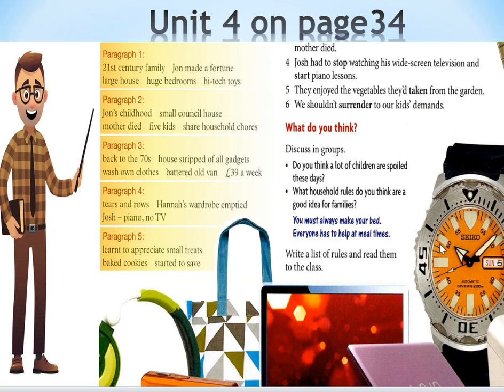Now let's go through the paragraphs. Paragraph one: 21st century — John is a boy who makes a futon, turning to something that makes a loud house. The bedroom has high-tech toys and many electronic items. Paragraph two: John's children live in a small concealed house with a mother who fights and chooses for the household.